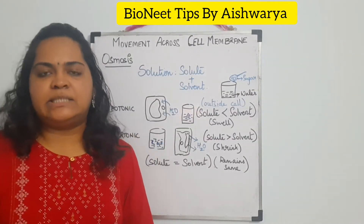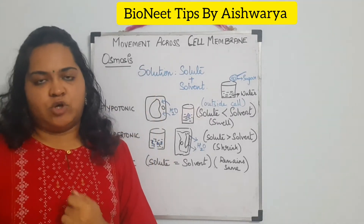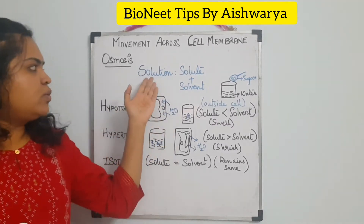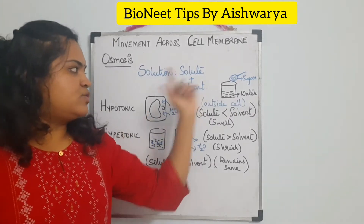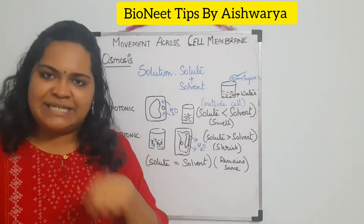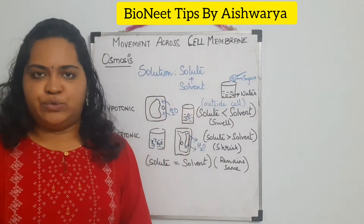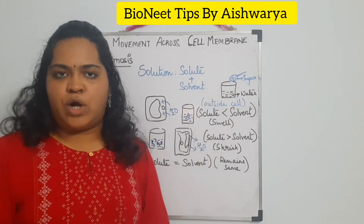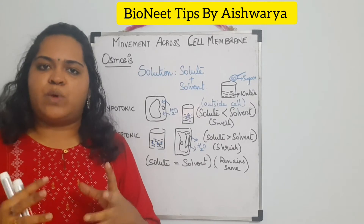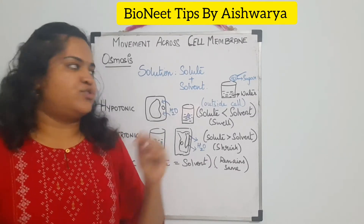We are now going to see another type of movement very similar to diffusion — osmosis. Before that, let me explain some important terms. A solution is made up of two components: the solute and the solvent. The solvent is the substance in which we dissolve another substance. In the case of sugar and water, you add 2–3 spoons of sugar to water — the water is the solvent and the sugar is the solute.